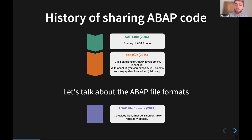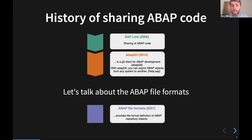Looking at what these tools actually share: with SAP Link, ABAP code was put into XML files. It was a possibility to share code, but not super good for readability. With ABAP Git we'll show some examples later, but it's also XML-based. That's about the history. Now I want to present the ABAP File Formats, which may be a natural successor of the file formats out there.